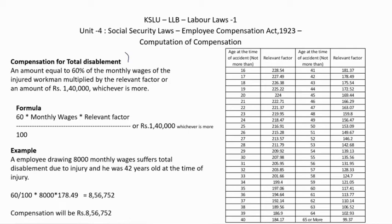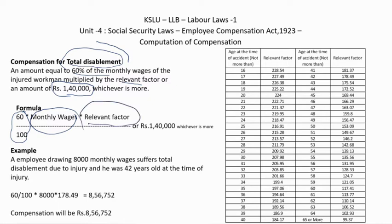For total disablement, the amount is equivalent to 60% of the monthly wages multiplied by the relevant factor, or ₹1,40,000, whichever is higher. The formula is: (60/100) × monthly wages × relevant factor, or ₹1,40,000, whichever is more.